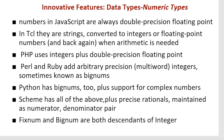PHP uses integers plus double-precision floating point. Perl and Ruby add arbitrary precision — that is, multi-word integers, sometimes known as bignums. Python has bignums too, along with support for complex numbers. Scheme has all of the above.